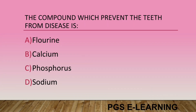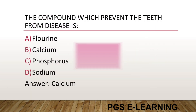The compound which protects the teeth from diseases is: Option A, fluorine. Option B, calcium. Option C, phosphorus. Option D, sodium. Correct answer is calcium.